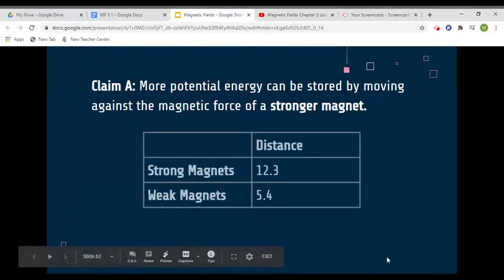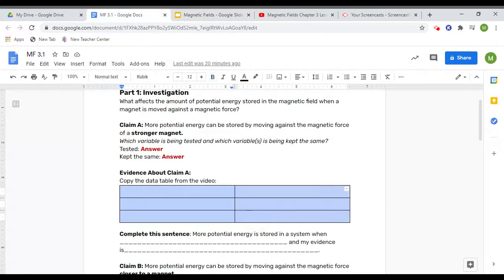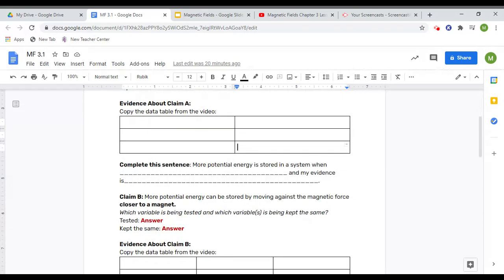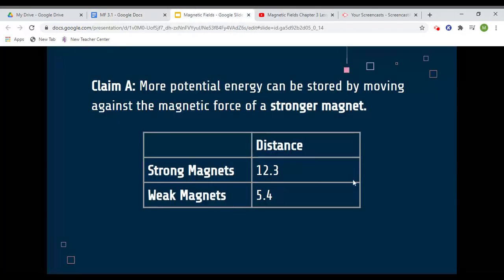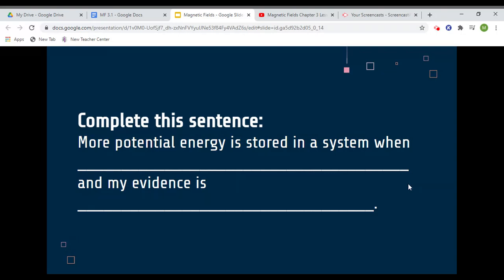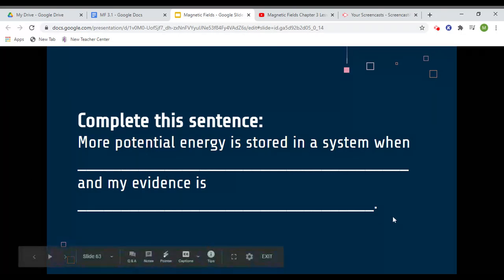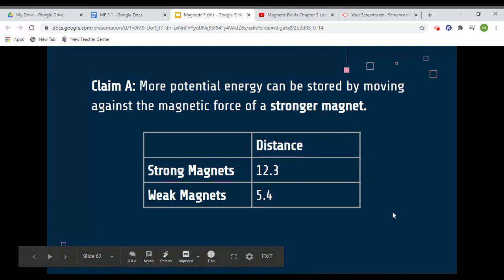When you create your data table, it should look something like this. You can pause the video to copy down the data table right here. And then once you're done copying that, you're going to complete the sentence: more potential energy is stored in a system when blank and my evidence is blank. You can pause the video now so you can write this down.